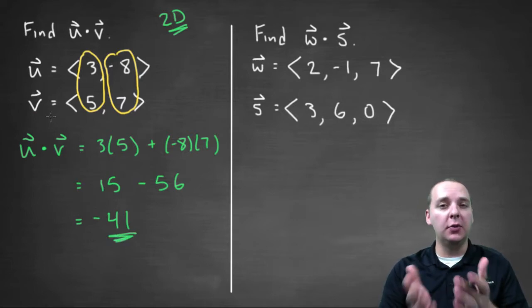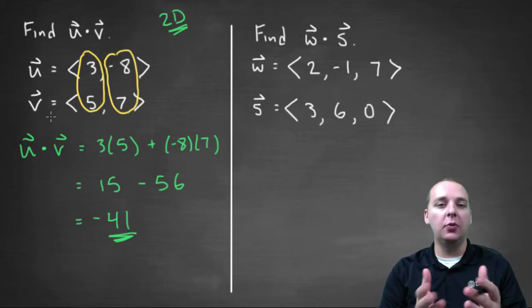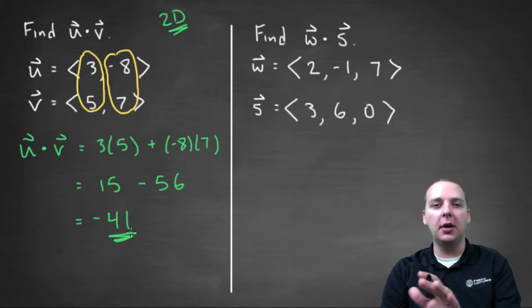Now, a very good question you might have is, well Devin, what's -41? What does that mean exactly? What we talked about in an earlier video, and we haven't gone into a whole lot of detail yet, more detail is coming up in some of the later videos, but what we know at least right now is this means that these vectors are not orthogonal.